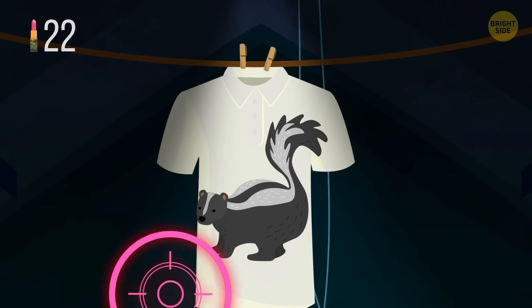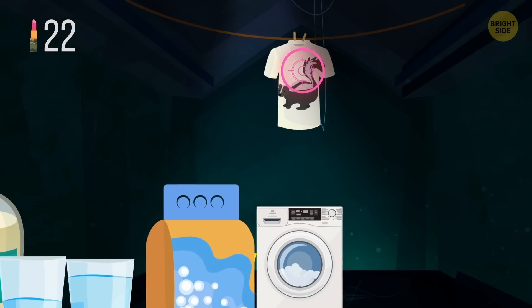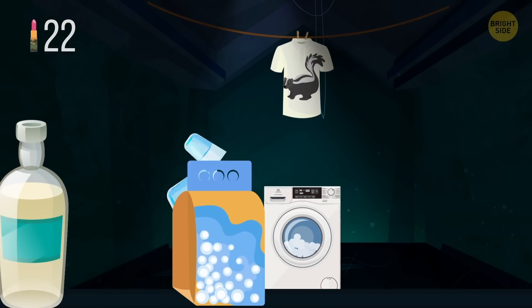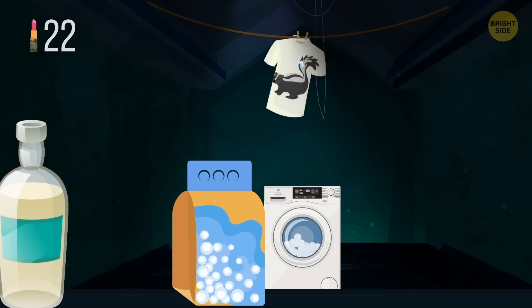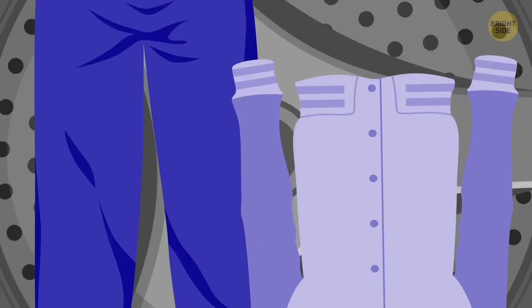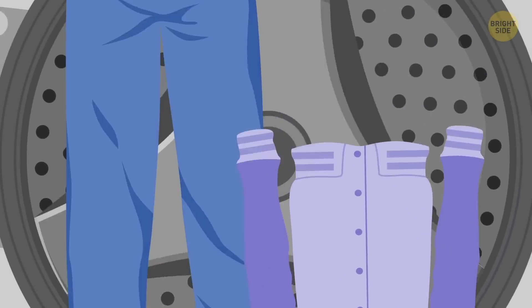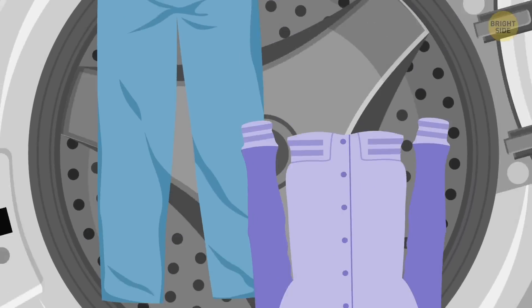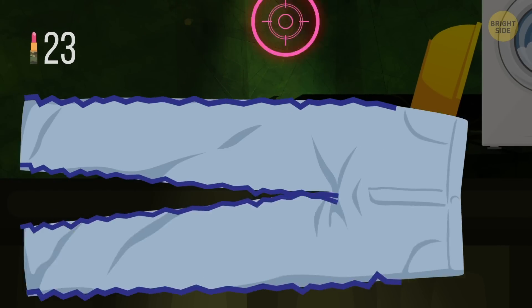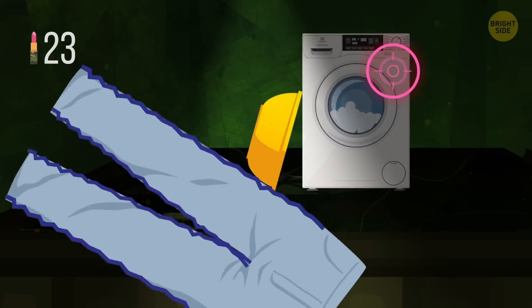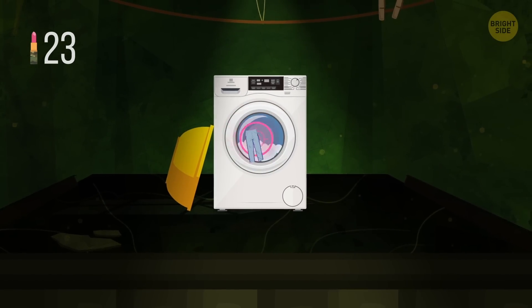To get rid of pet smells on your clothing, mix a cup of laundry detergent with half a cup of vinegar and wash as you always do. When your jeans rub against other clothes in the washing machine, they gradually lose their color. To minimize this unwanted effect, turn your jeans inside out before putting them in the washer.